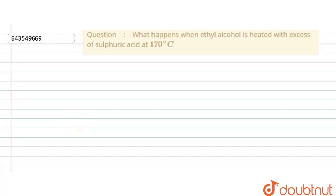Let us see what the question says: What happens when ethyl alcohol is heated with excess of sulfuric acid at 170 degrees Celsius?